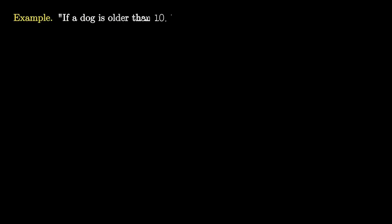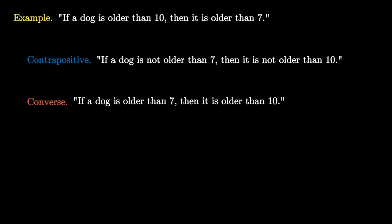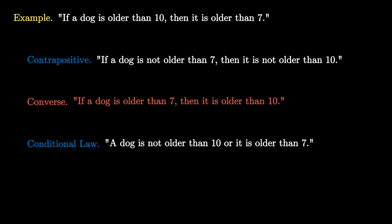Let's investigate this new terminology with the proposition: 'if a dog is older than 10, then it is older than 7,' which is true. The contrapositive says: 'if a dog is not older than 7, then it is not older than 10' — this is equivalent to the original and also true. The converse says: 'if a dog is older than 7, then it is older than 10,' which is false because the dog may be 8 years old. The conditional law restates it as: 'a dog is not older than 10 or it is older than 7,' which is equivalent and true.